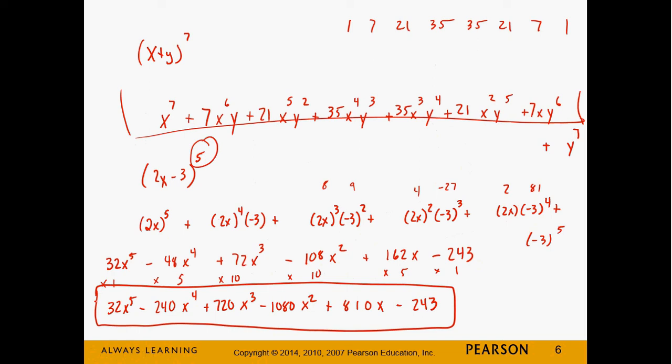Instead of actually doing (2x − 3) × (2x − 3) to get a trinomial, then multiplying by (2x − 3) again to get a four-term polynomial, and so on five times — which could be really long and drawn out — this binomial expansion method is long and drawn out in a much easier way.